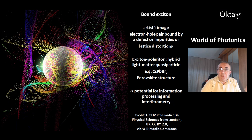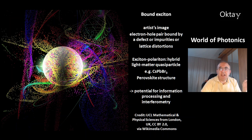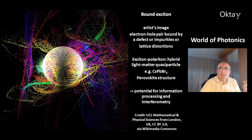This is an artist's image of a bound exciton — an electron-hole pair bound by a defect, impurities, or lattice distortions. Then there's the exciton-polariton, a hybrid light-matter quasi-particle. It exists, for example, in the compound cesium lead bromide, which has a perovskite structure. This exciton-polariton has potential for information processing and interferometry.